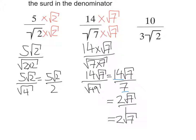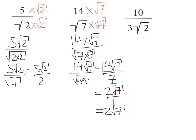Okay, on to the last one: 10 over 3 root 2. So we just need to multiply by the surd, not 3 root 2, just root 2.